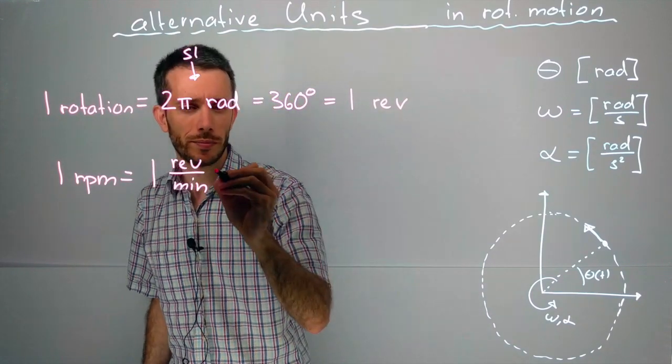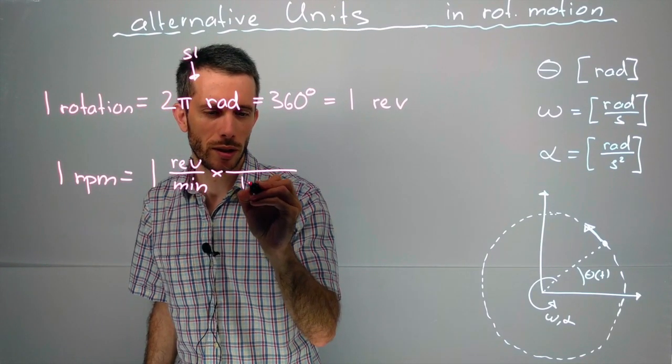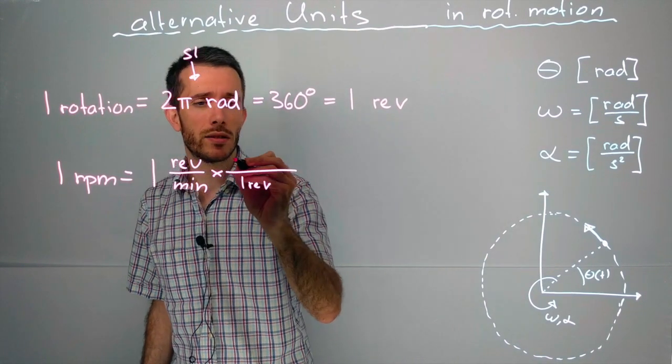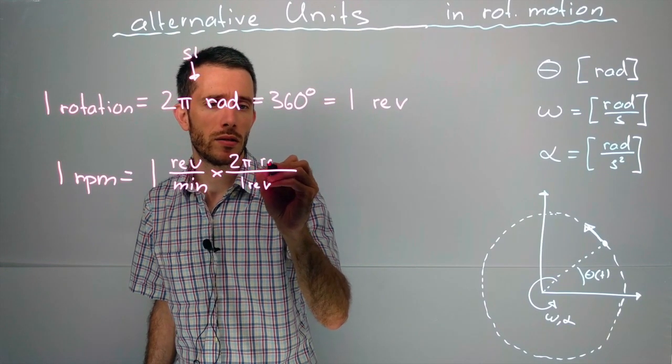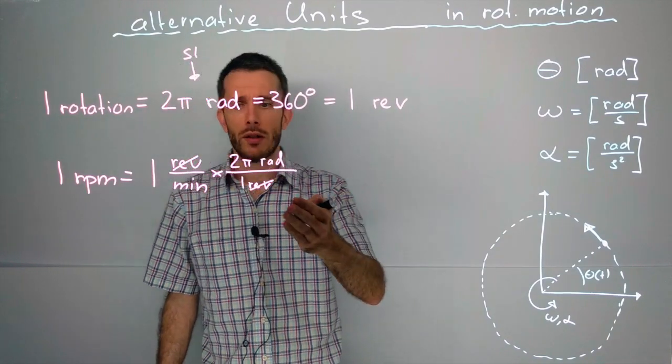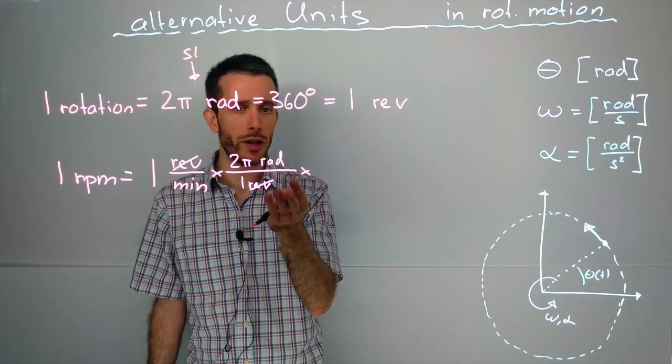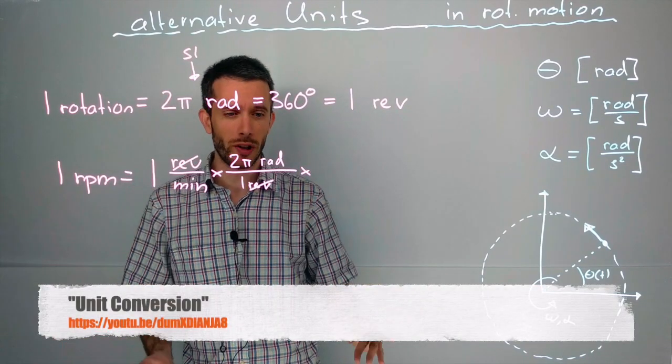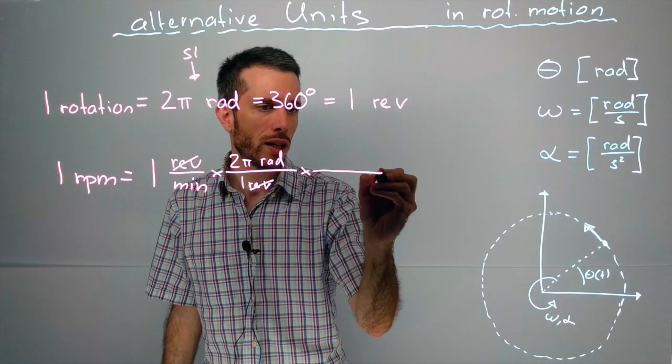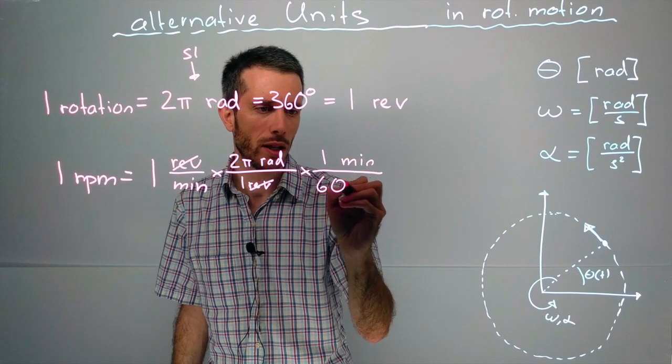So how do we do that? First, I want to get rid of 1 revolution, so 1 revolution goes down here, and I want to replace it with its equivalent in radians, so 2π radians. This way, the revolution is cancelled and replaced by radians. Now, I'll do the same with minutes. You might remember that this is standard unit conversion that I showed you in a video at the very beginning of this series on mechanics.